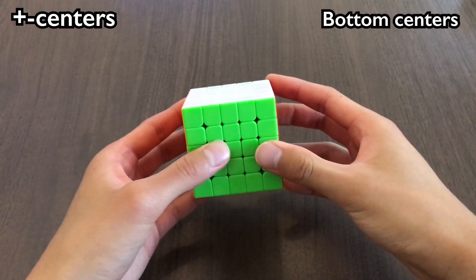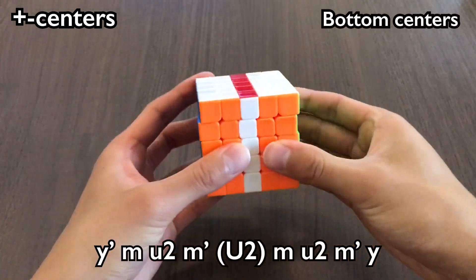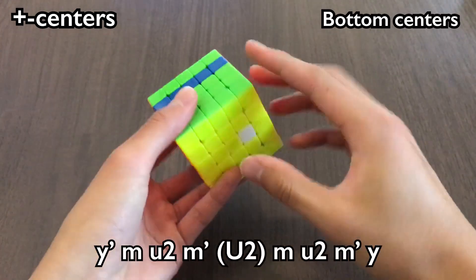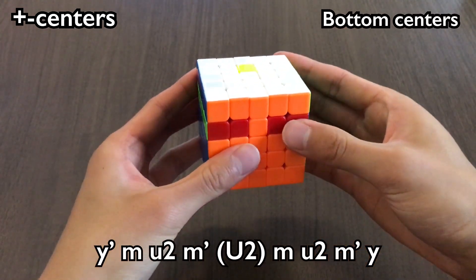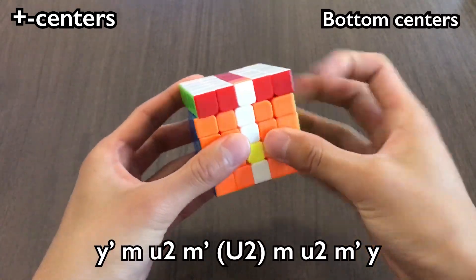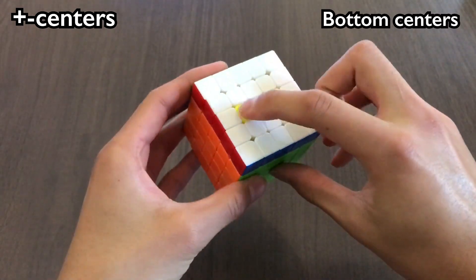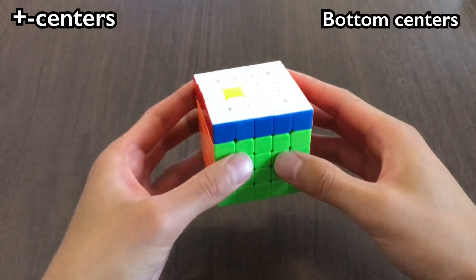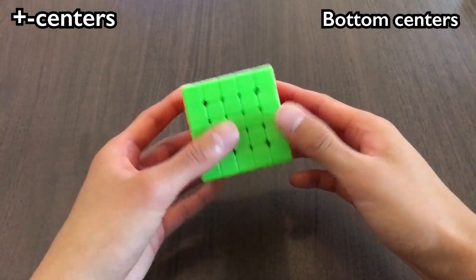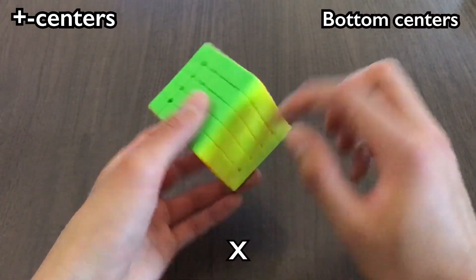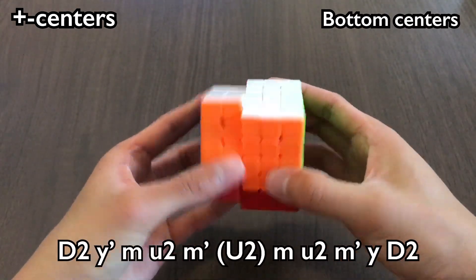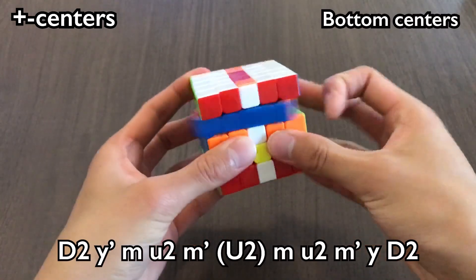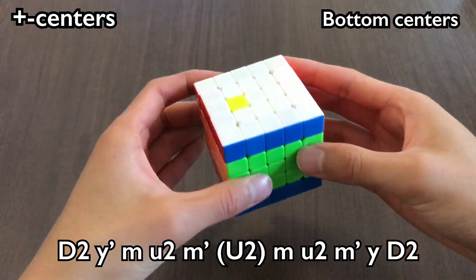Finally, let's do the bottom centers. Notice that this alg, Y' M U2 M' inserts V into here, without disturbing the U layer. We can then do a U2, and then undo the setup. This swaps the buffer with V. For all the bottom centers, we would just set up to V. So if we wanted to solve X, we can do a D2, which puts it into V's spot, and then do the alg for V, and then undo the D2.